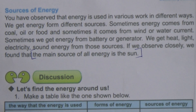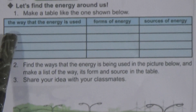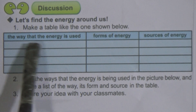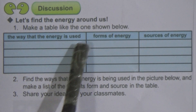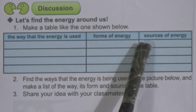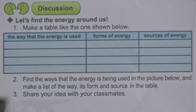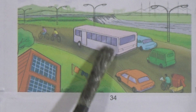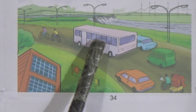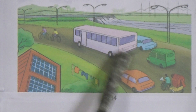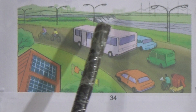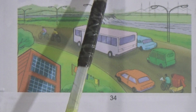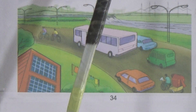If we observe closely, we find that the main source of all energy is the sun — we have already learned several times that the sun is the main source of all energy. Here they give a table you have to make and fill up: the way that energy is used, the source, and the form of energy. For example, a vehicle runs with the help of fossil fuel and the form of energy is chemical energy.